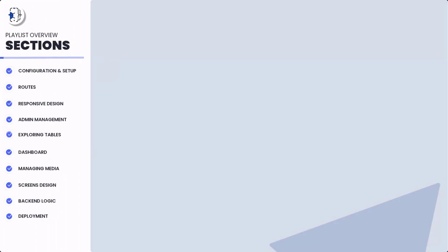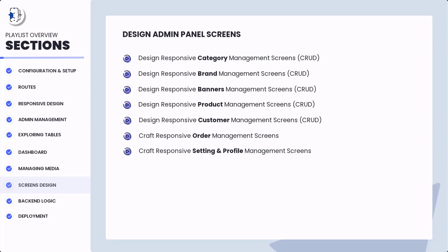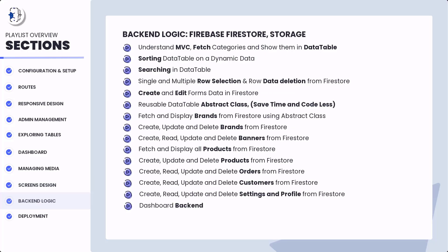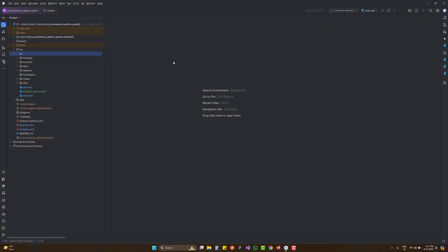We are creating a Flutter ecommerce admin panel and this is the second-to-last section where we design the screens. Once the design is complete, the last section is to add the backend functionality. We have already covered all the concepts and features needed to create any type of admin panel using Flutter Web, so make sure to watch those previous videos. You can download the complete code — the link is in the description — and the ecommerce app code and playlist links are also there.